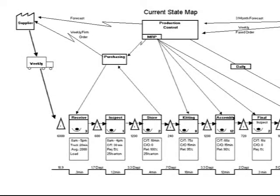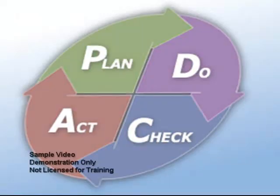We begin with baseline assessment and planning tools, because tools like value stream mapping are fundamental to understanding where you are today and creating your desired future state tomorrow. Other planning and implementation tools that you might use include A3 reports and Hoshin planning.